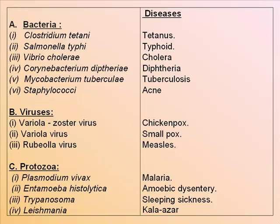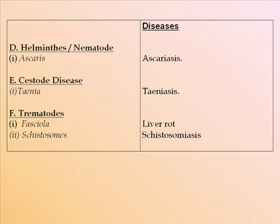Helminths and nematodes which cause diseases: Ascaris causes ascariasis. Cestode diseases: Taenia causing taeniasis. Trematodes: Fasciola causes liver rot; Schistosomes cause schistosomiasis.